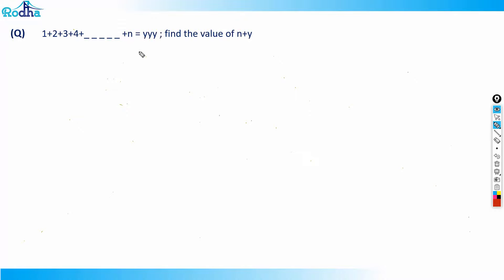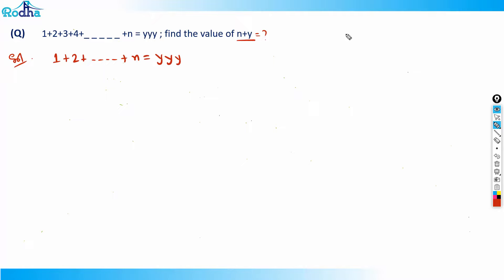Hi guys, let's look at this question. This is a good question and these kinds of concepts are used a lot in numbers and algebra. The question says we have values from 1 to n, and the sum is triple y — meaning a repdigit like yyy. We need to find the value of n plus y.